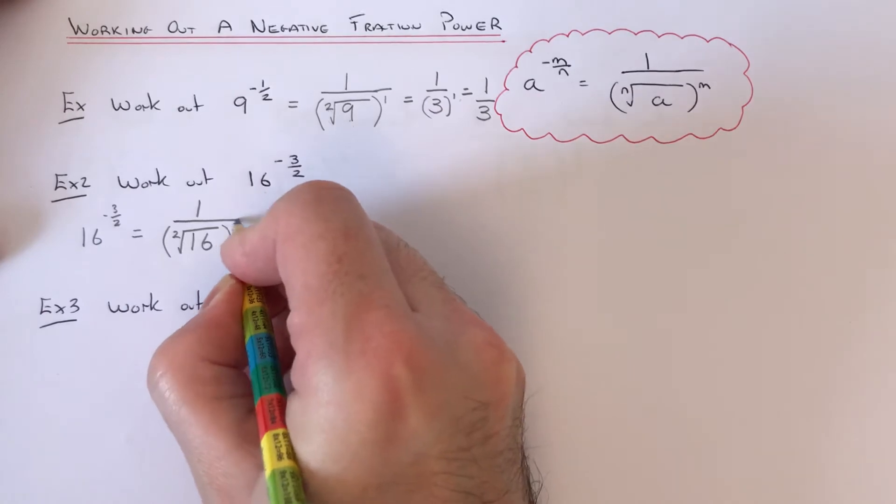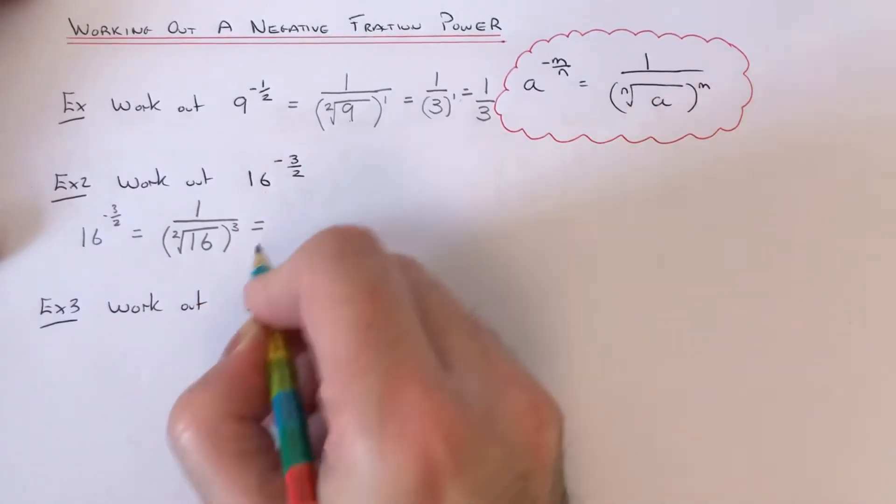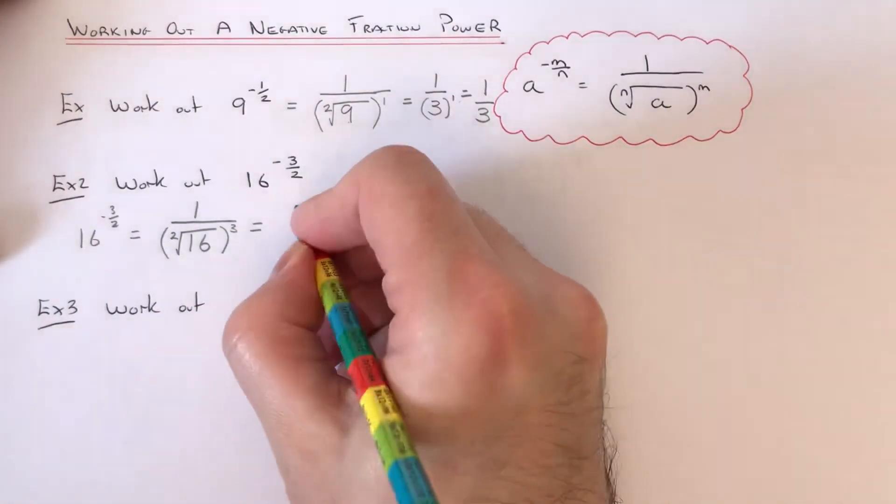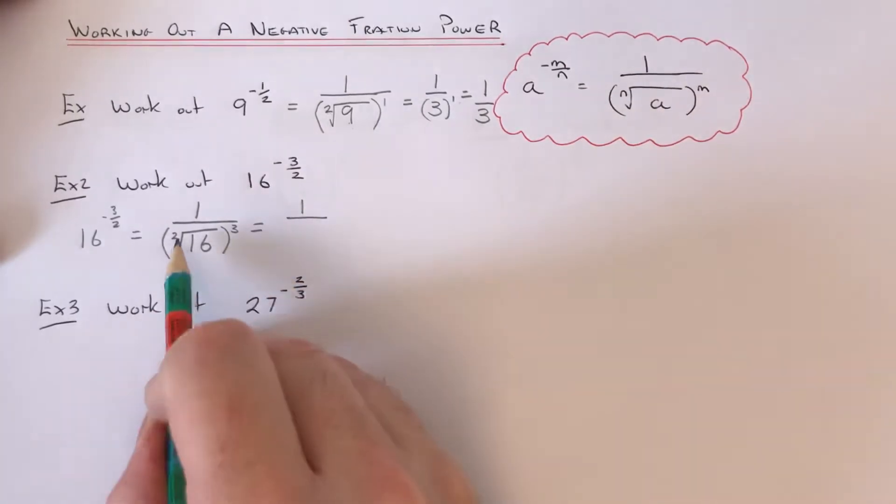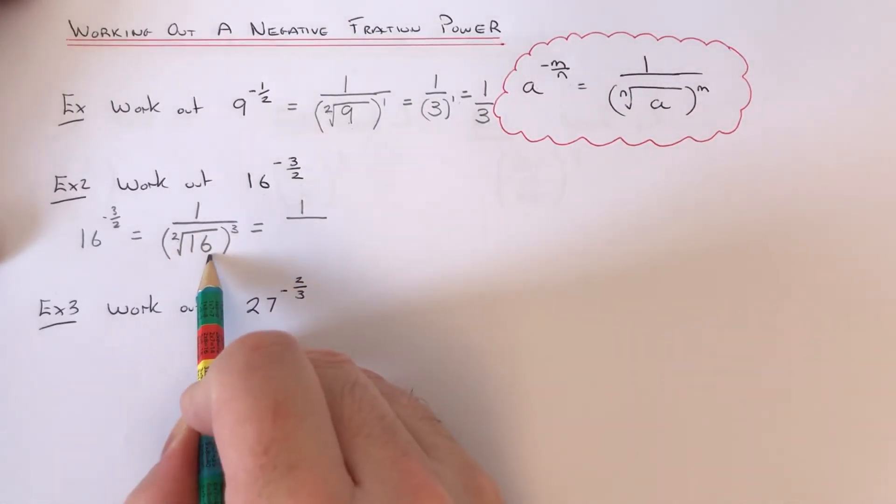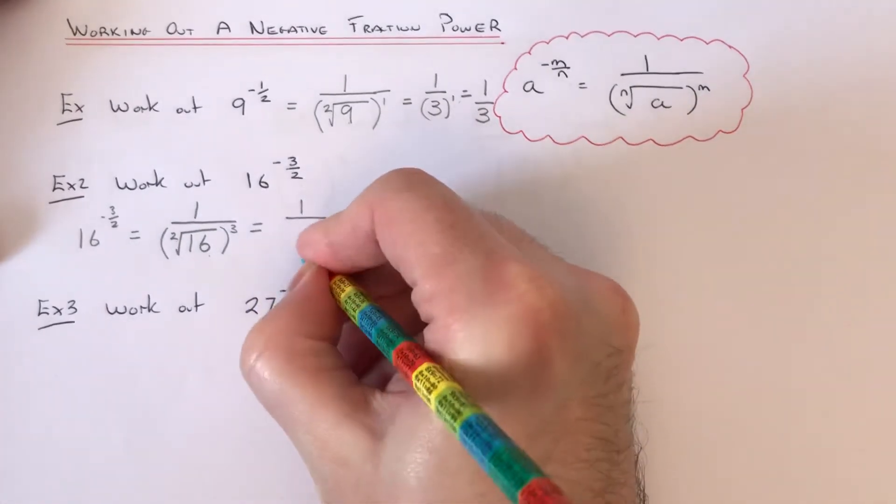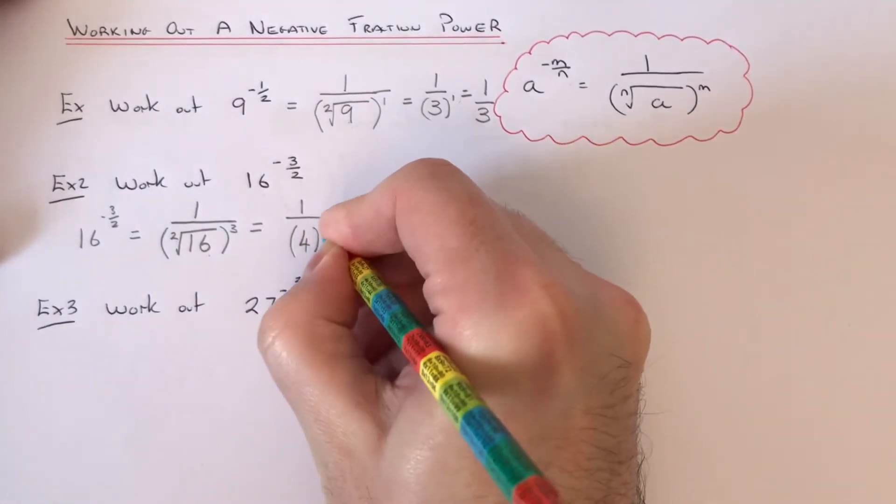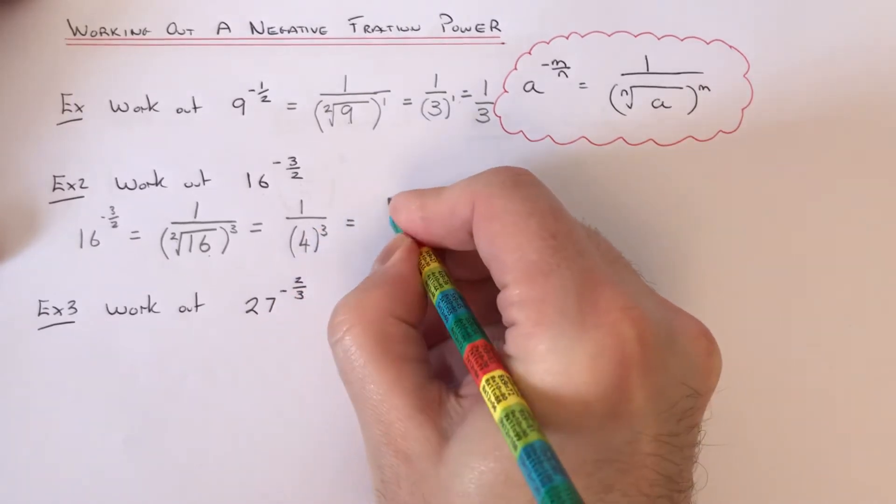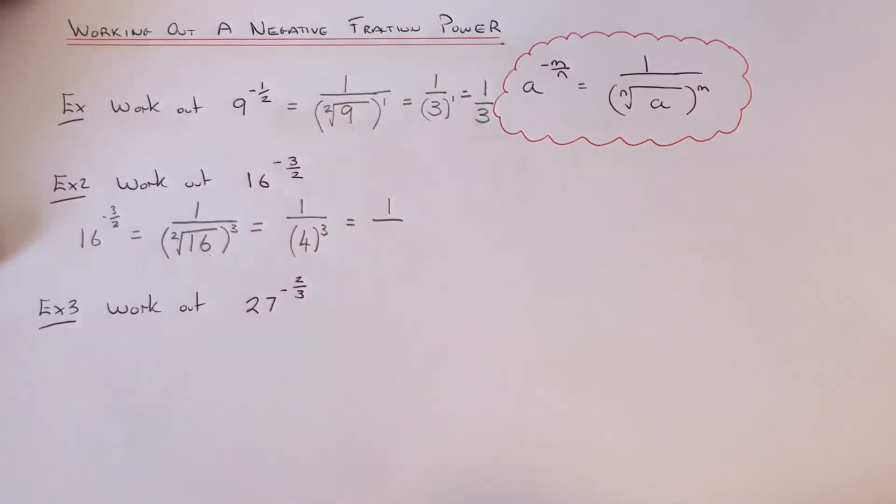Again, we just need to work this out now. We've got the little 2 on the root, that's the square root of 16, which is 4 because 4 times 4 is 16. Then we just need to cube the 4. So 4 cubed is 4 times 4 times 4, which is 64. So we end up with 1/64.